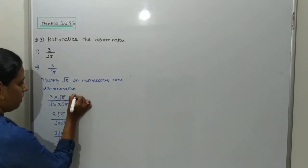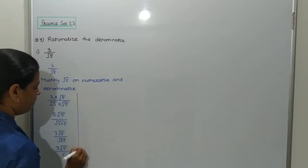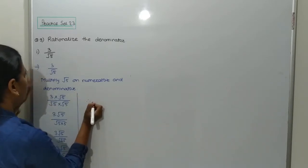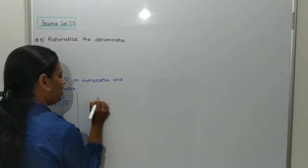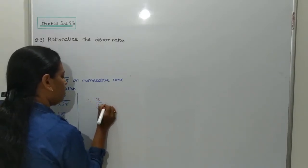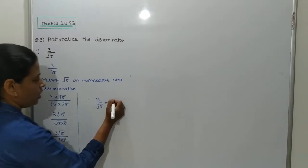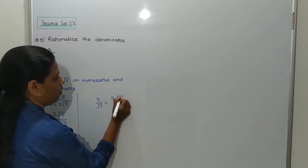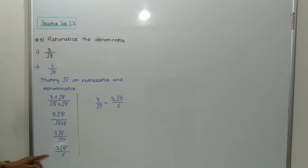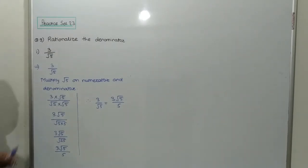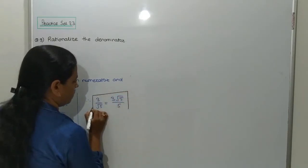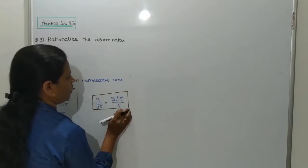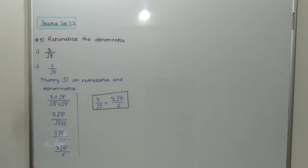Therefore, after rationalizing the denominator, 3 upon root 5 is equal to 3 root 5 upon 5. This is your final answer. Now next, the second question.